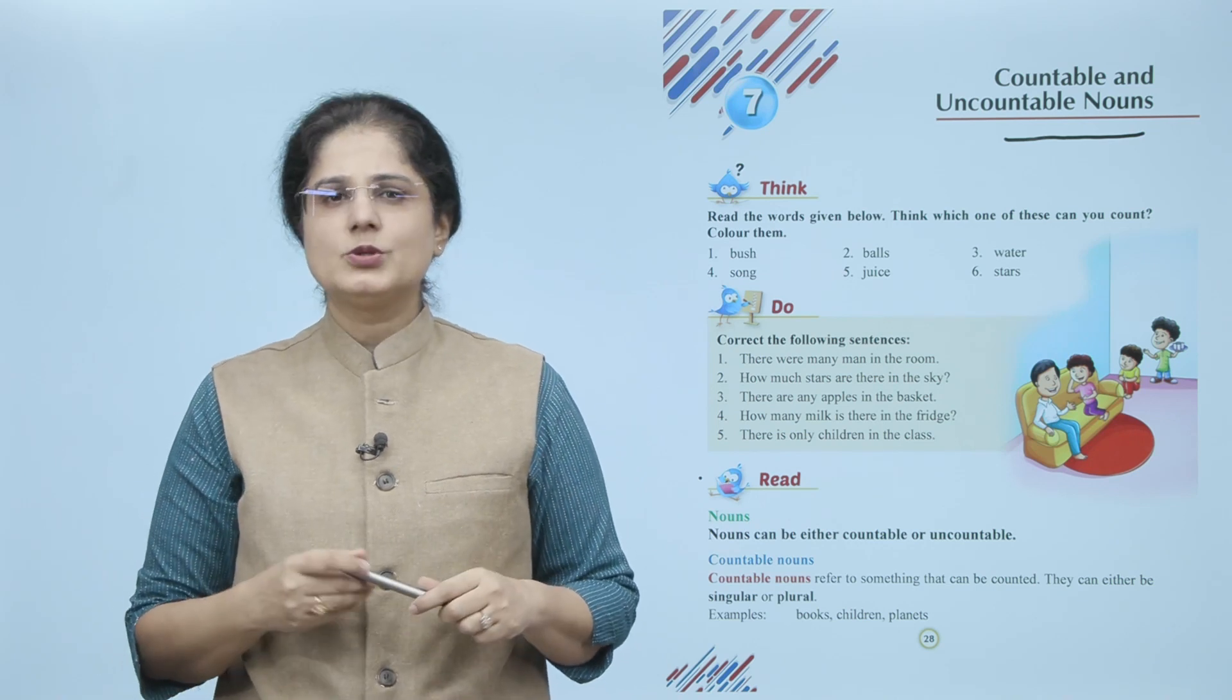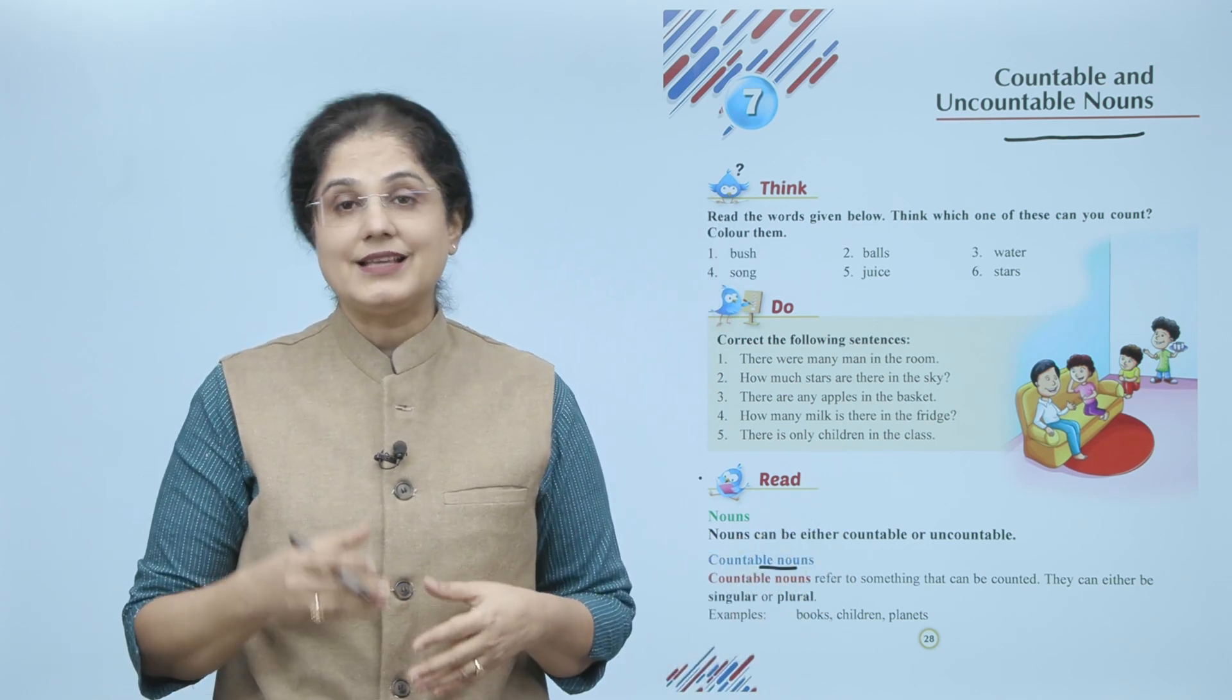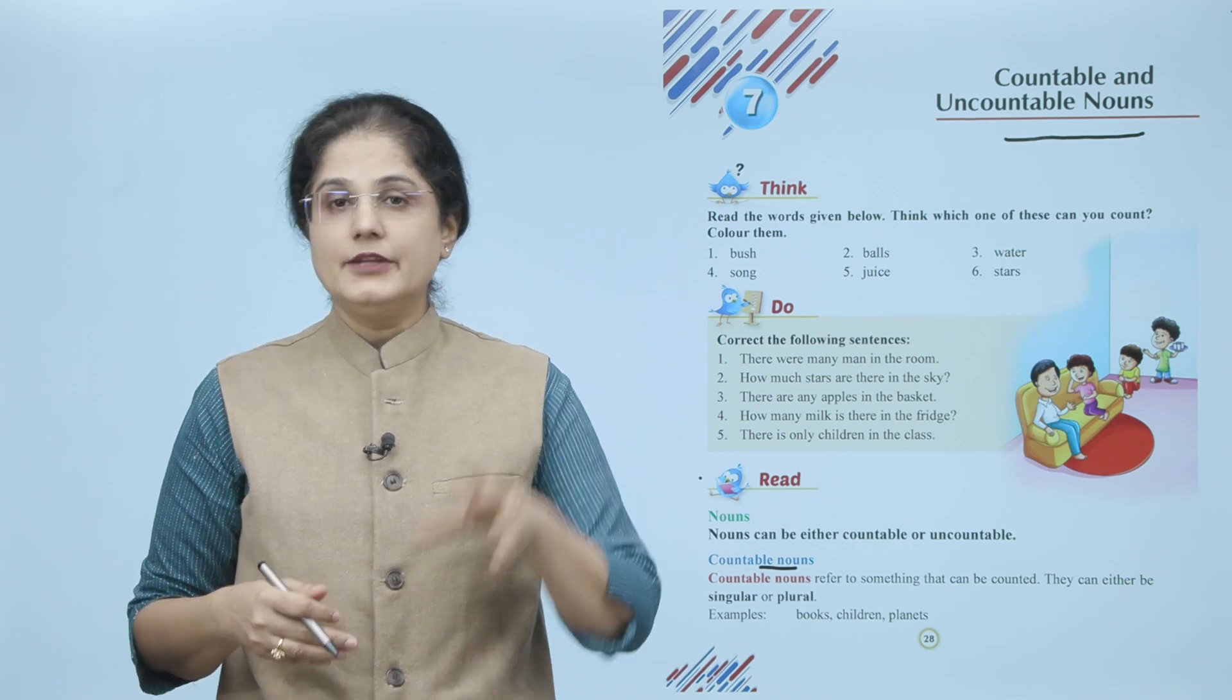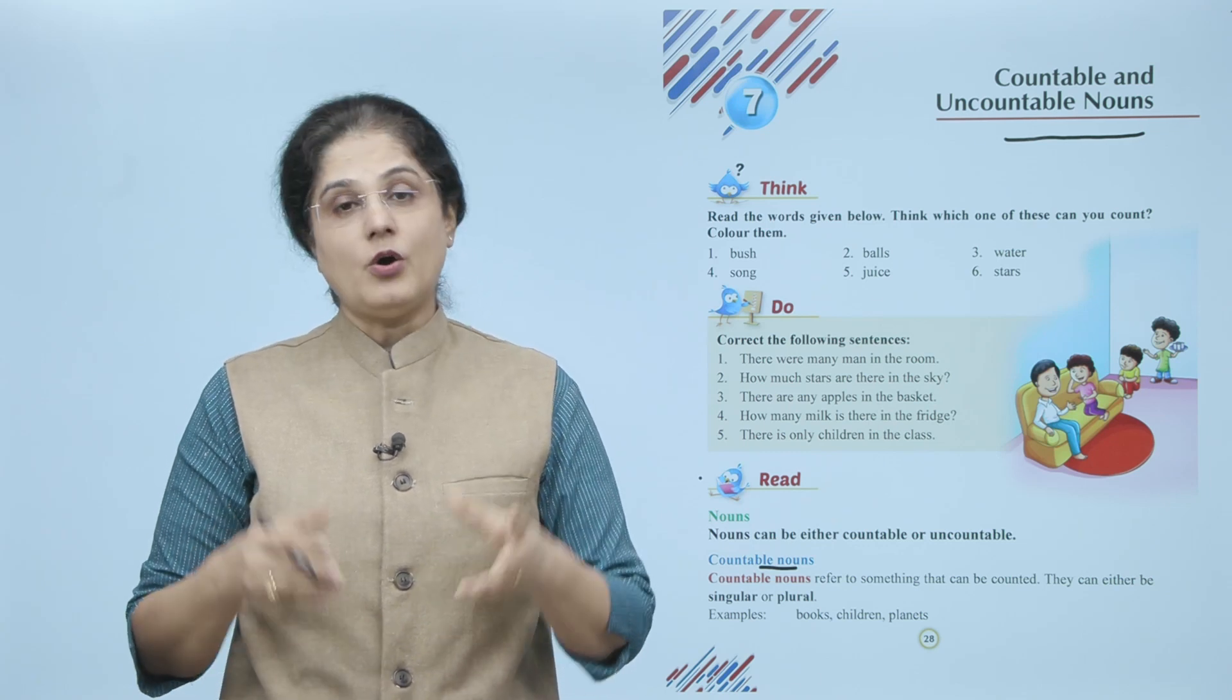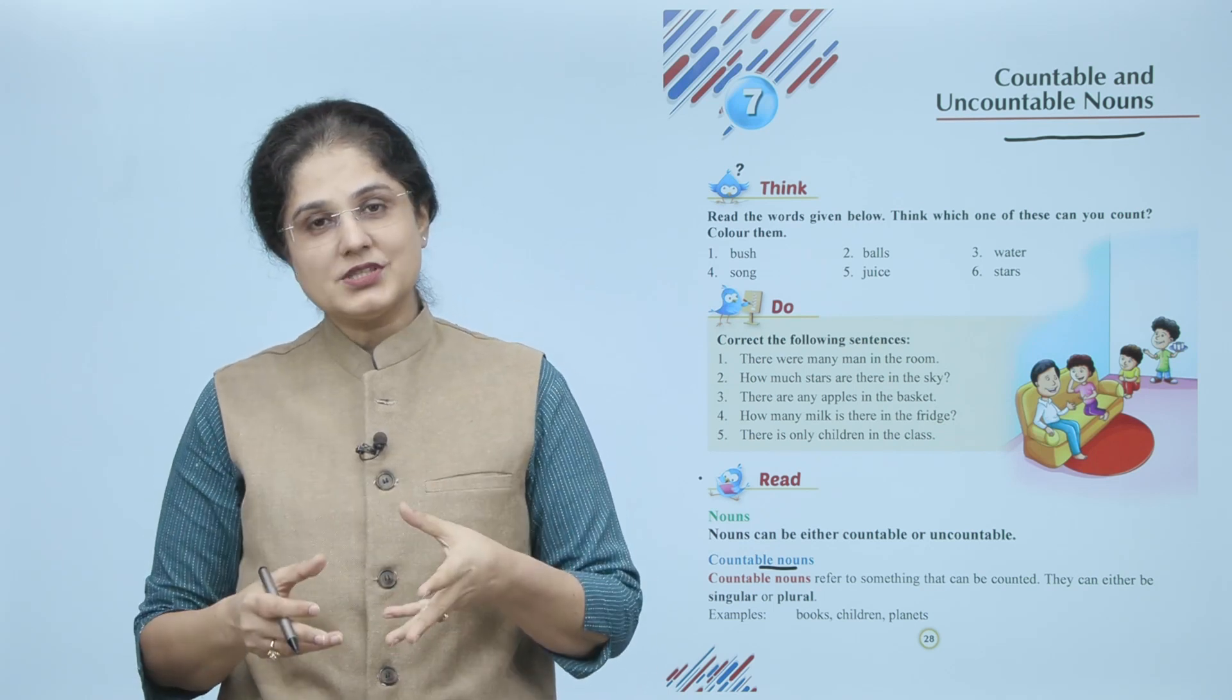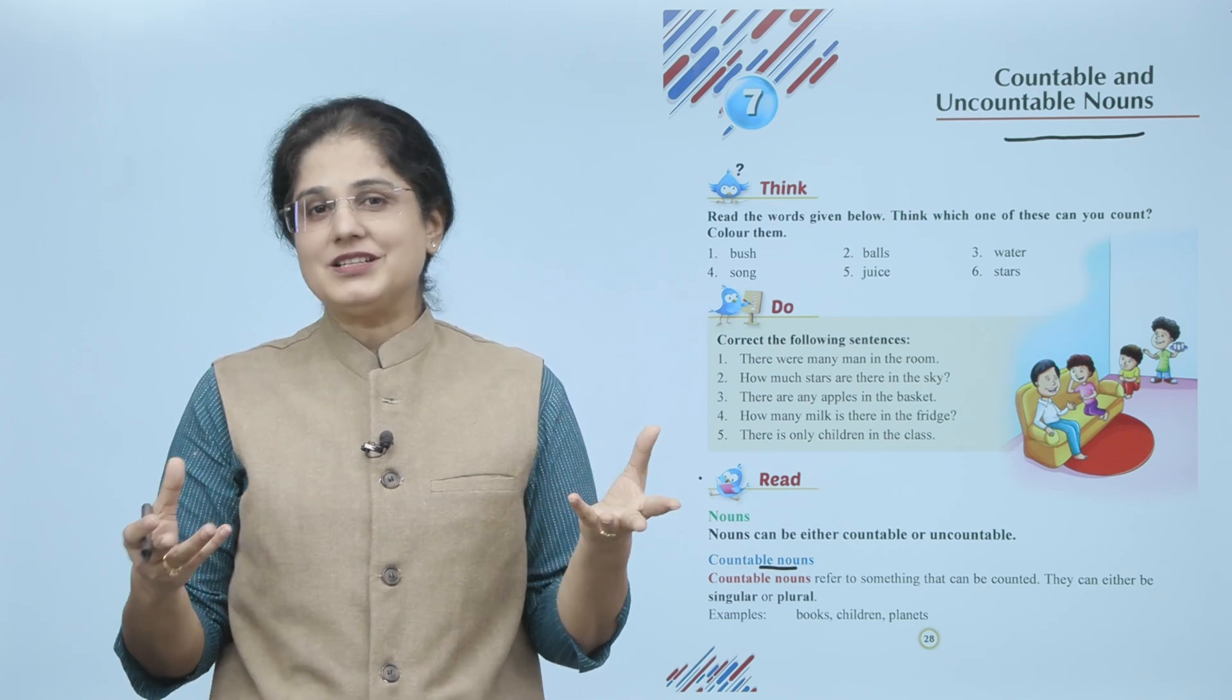So let us first of all look at countable nouns. Countable nouns refer to something that can be counted. They can either be singular or plural. Jin nouns ko aap count kar sakte ho unhye aap countable noun kehte ho, aur ye ya toh singular ho sakte hai yaani ki one, ya phir plural ho sakte hai yaani ki many. For example: books, children, planets - inko aap count kar sakte hain.